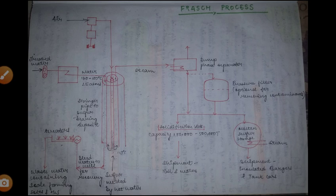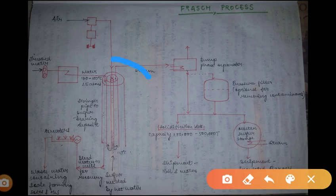So without wasting any time, let us start learning how sulfur is extracted. In the flow sheet you can see that three concentric pipes are there, and the innermost one is containing the solid sulfur.